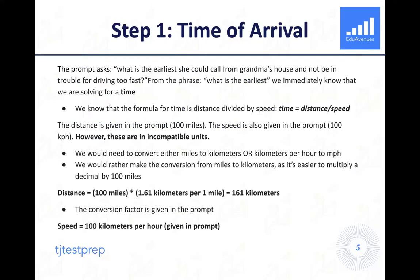First step would be to determine the time of arrival with the 20-minute lunch break. The prompt is asking specifically, what is the earliest she could call from grandma's house and not be in trouble for driving too fast? From the phrase, what is the earliest, we immediately know that we're solving for a time. We know that the formula for time is going to be distance divided by speed. The distance is actually given in the prompt, 100 miles. And they also give us the maximum speed in the prompt, 100 kilometers per hour.